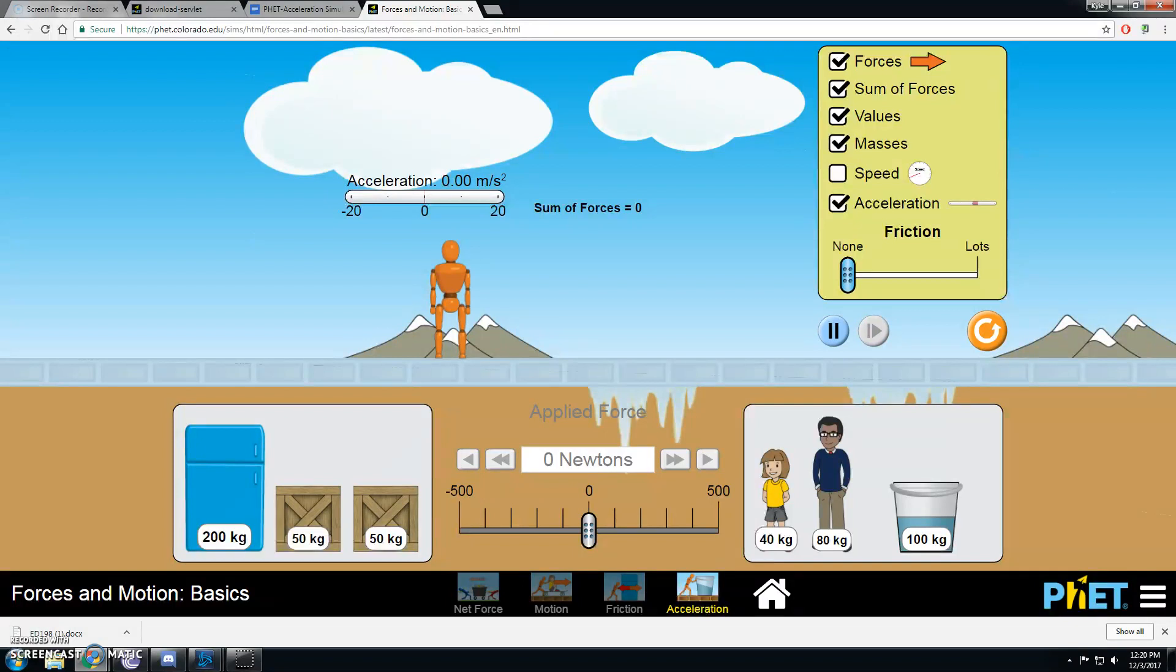The second thing that we need to do is choose a mass at the start of the experiment and keep it constant throughout. Since we're trying to figure out what the relationship is between force and acceleration, we want to keep mass a constant. That's going to be one of our controlled variables. So I'm going to choose this bucket of water right here. It's 100 kilograms.